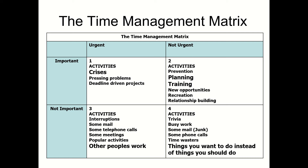Hi guys, welcome to this session on time management. In this module I want to have a look at the time management matrix, which you can see on the screen at the moment. What you've got is basically four boxes, or four quarters, or segments. Across the top you've got 'urgent' and 'not urgent', and down the side you've got 'important' and 'not important'.